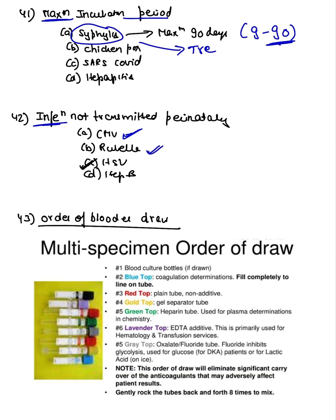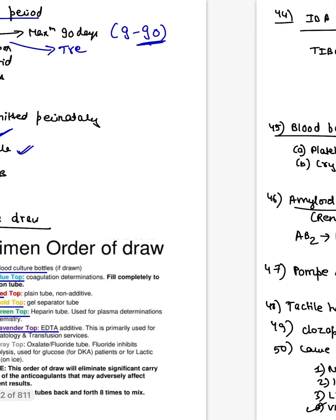Order of blood draw is very important. First: culture bottle, then blue vacutainer, then red vacutainer, then gold, then green, then EDTA — which is the gray or lavender vacutainer. Simple to remember.